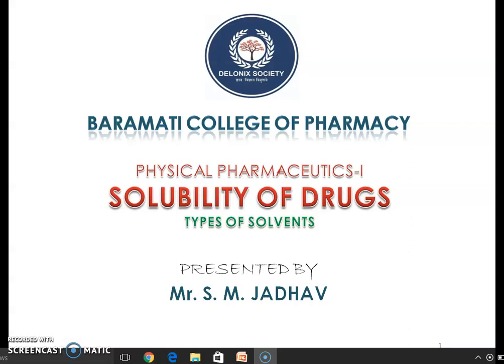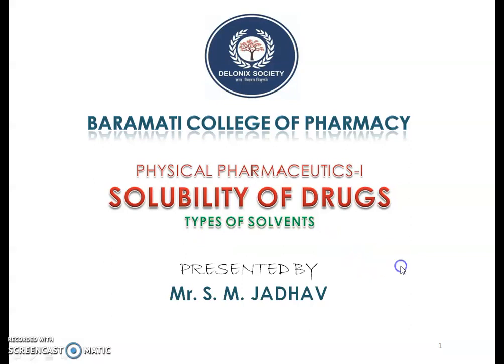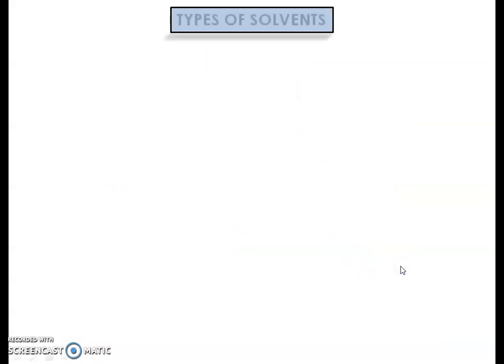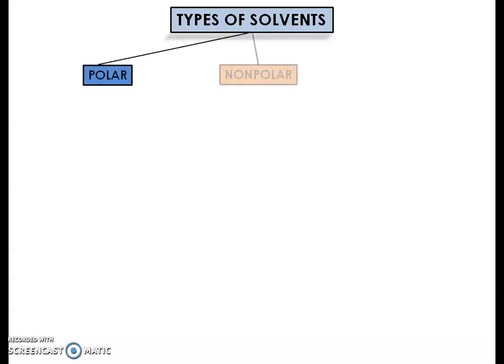Welcome students, welcome to the class of physical pharmaceutics. In the chapter on solubility of drugs, today we are going to discuss types of solvents. Broadly, there are three types of solvents used in the solubility mechanism: first is polar solvent, second is non-polar solvent, and third is semi-polar solvent. We will discuss these one by one.